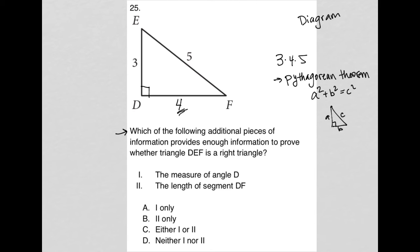So choice one says the measure of angle D. So yeah, if we knew the measure of angle D was 90, then yeah, we'd say for sure it's a right triangle. And if we knew it was something other than 90, we would say for sure it's not a right triangle. So I like that answer.